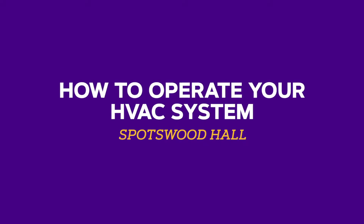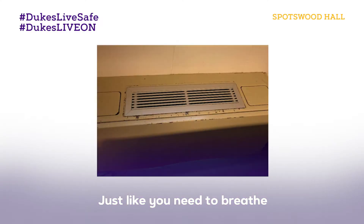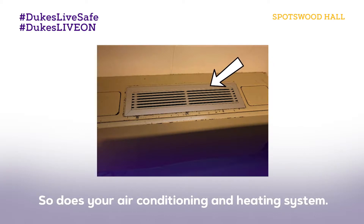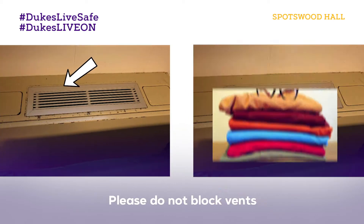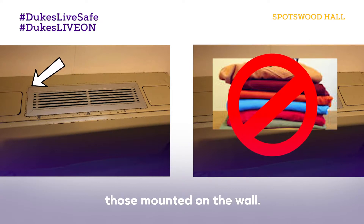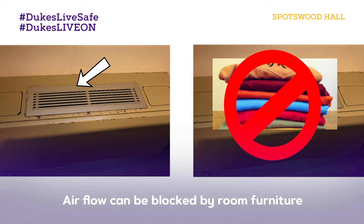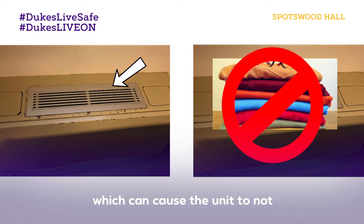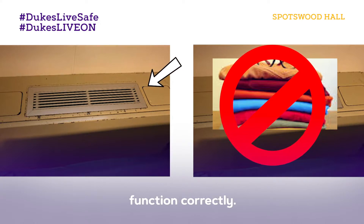How to operate your HVAC system. Just like you need to breathe in order to operate well, so does your air conditioning and heating system. Please do not block vents at the bottom of your unit or those mounted on the wall. Airflow can be blocked by room furniture, boxes, and other items which can cause the unit to not function correctly.